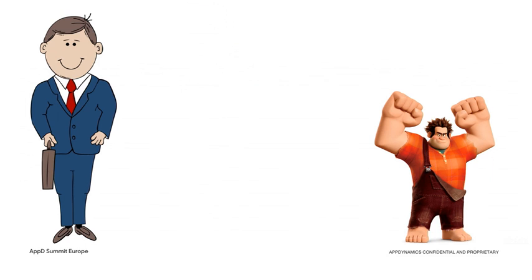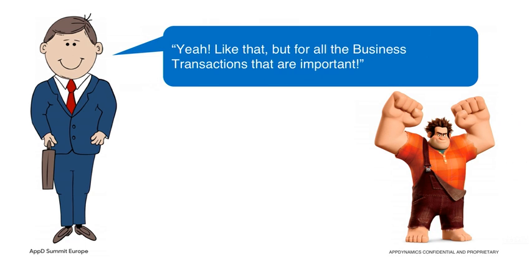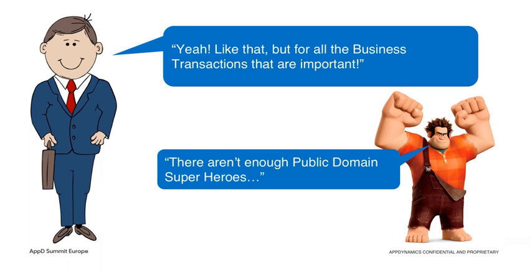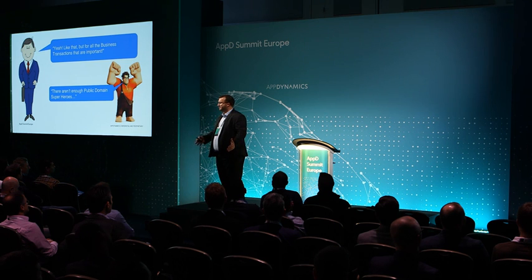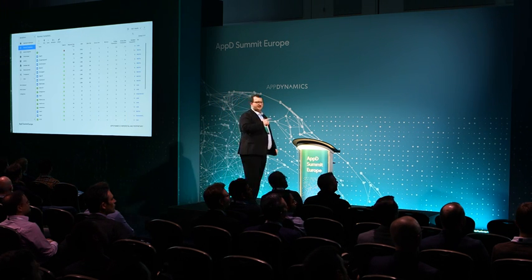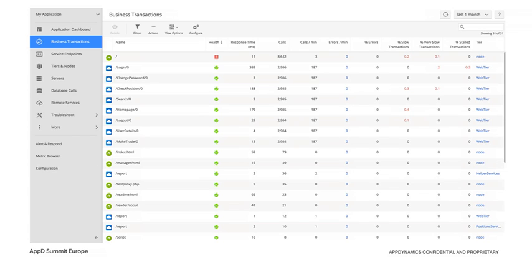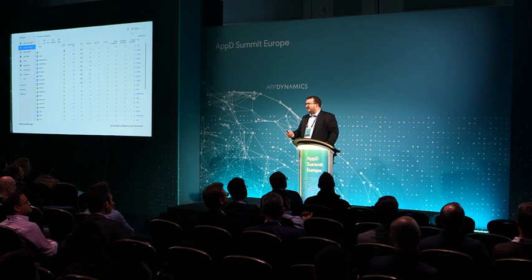What's cool is their eyes go red if there's a problem with the application. The sales guy says he wants something like that but for all the important business transactions. Unfortunately, there aren't enough public domain superhero pictures to make a dashboard. But we've got this list in AppDynamics — if you sort it by health, you get all the problems at the top. So why would you want Lash Lightning's eyes going red? Is it just to make it pretty, or is it actually usable?